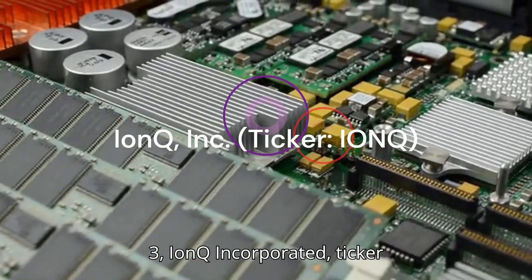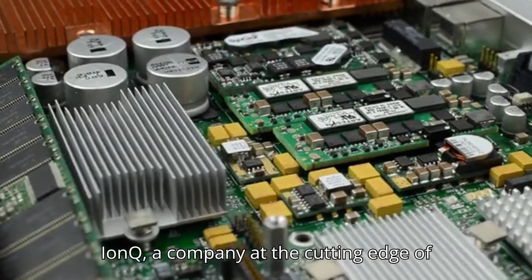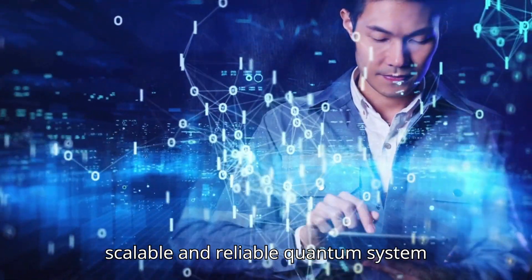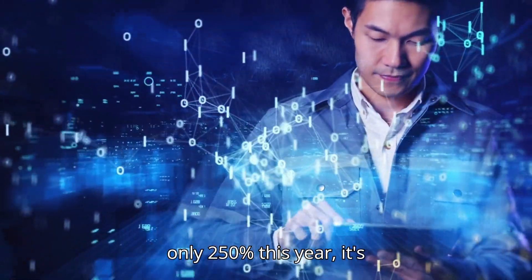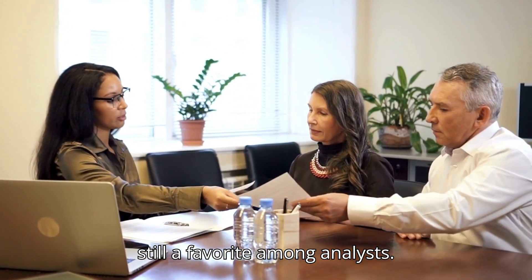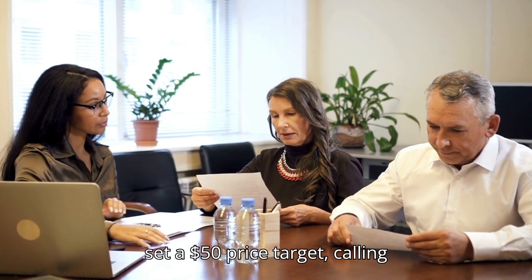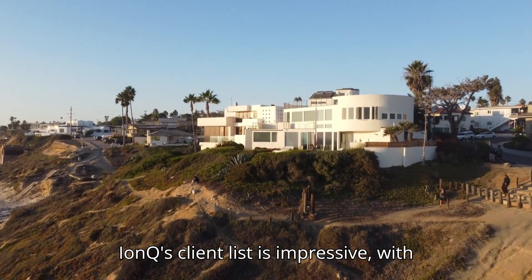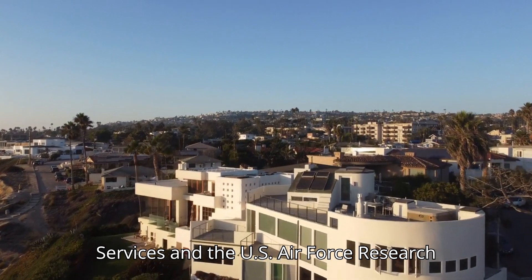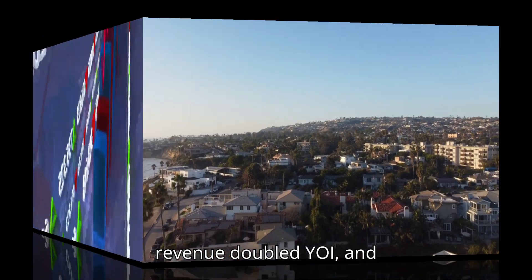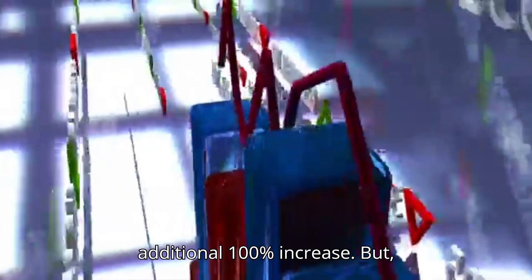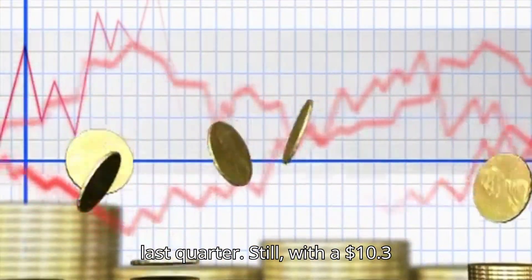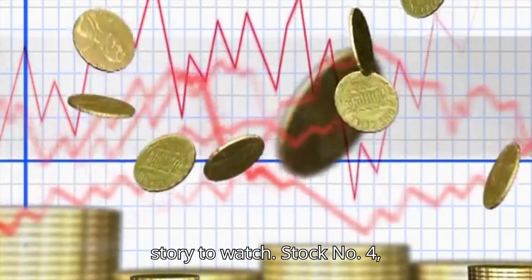Stock number three: IonQ Inc., ticker IonQ. Now, let's talk about IonQ, a company at the cutting edge of quantum hardware and software. IonQ specializes in trapped ion technology, which many experts consider the most scalable and reliable quantum system available. While IonQ stock is up only 250% this year, it's still a favorite among analysts. Investment firm DA Davidson recently set a $50 price target, calling IonQ a compelling pure-play investment as quantum computing transitions from the lab to real-world applications. IonQ's client list is impressive, with partnerships including Amazon Web Services and the U.S. Air Force Research Lab. Its Q3 2024 revenue doubled YOY and 2025 projections suggest an additional 100% increase. But, like its competitors, IonQ remains unprofitable, losing $0.12 per share last quarter. Still, with a $10.3 billion market cap, it's a quantum growth story to watch.